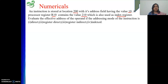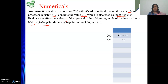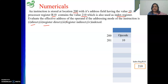We need to find the effective address — that is, the address of the operand — for different addressing modes. At address 200, opcode is there; at 201, our offset 10 is stored. Register R10, also acting as the index register, holds the value 210.